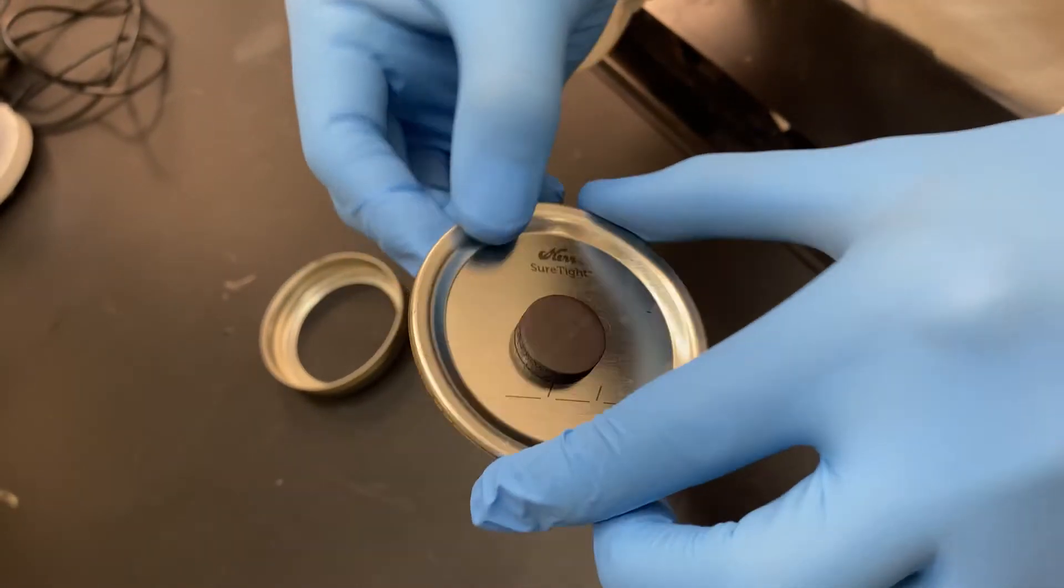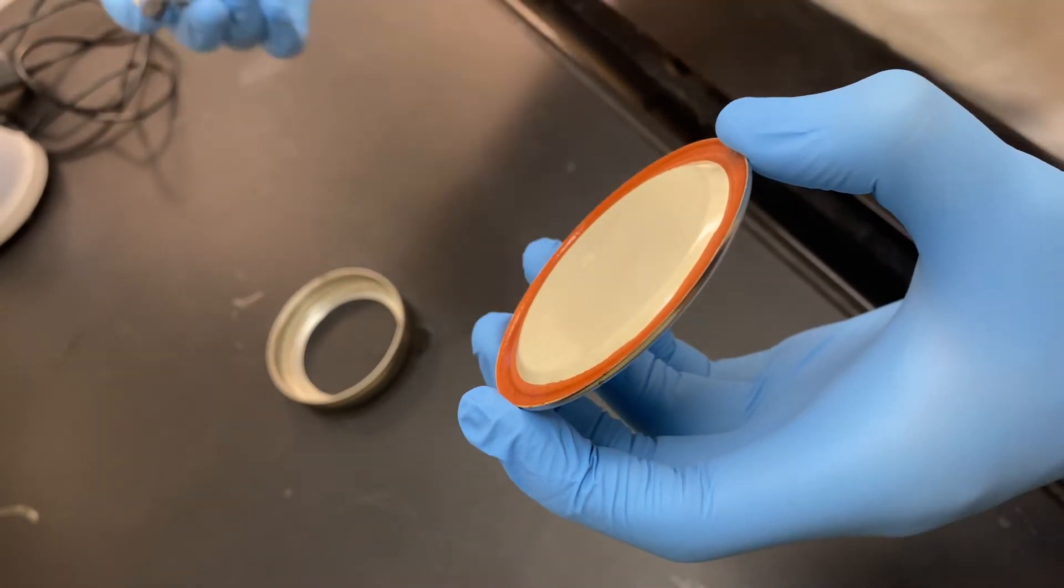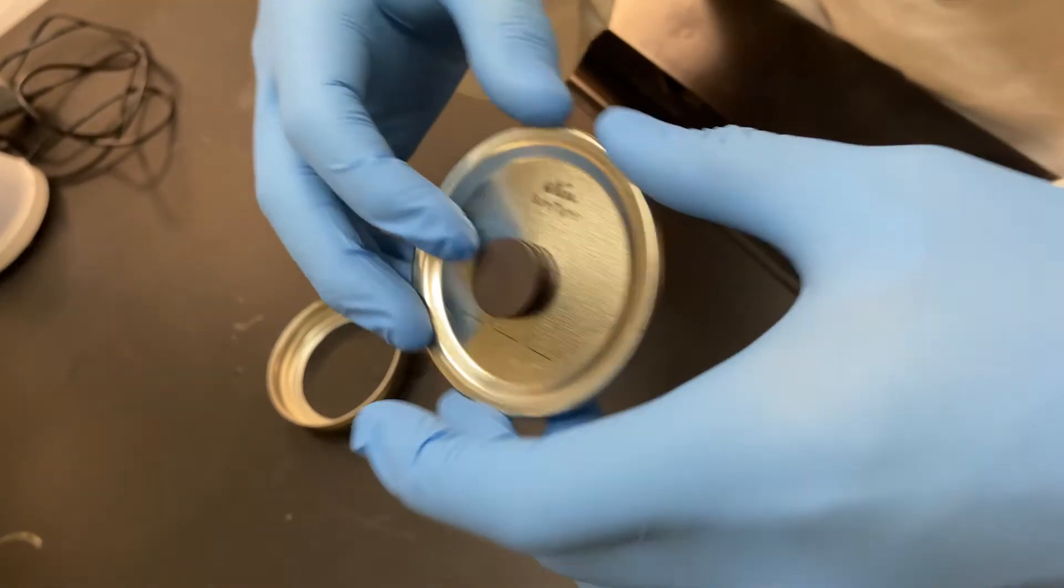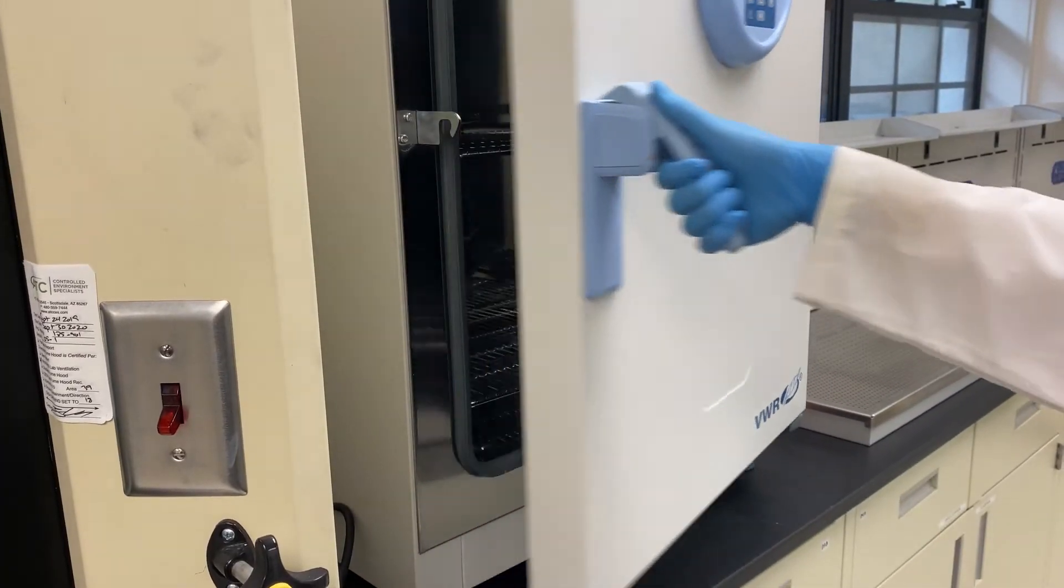In a fume hood, fix the safety pin to the lid of the mason jar by placing the magnet on the outside of the lid and the pin on the inside. The pin should be lengthwise across the magnet.